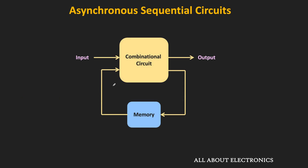Consider an asynchronous sequential circuit where the input is initially low. As soon as the input level changes, the circuit responds immediately. The combinational circuit block responds to that change right away, and after its propagation delay generates a suitable output for the memory. In asynchronous sequential circuits, this memory element also responds to that change immediately and changes its output state. So overall, asynchronous sequential circuits respond to input changes immediately.